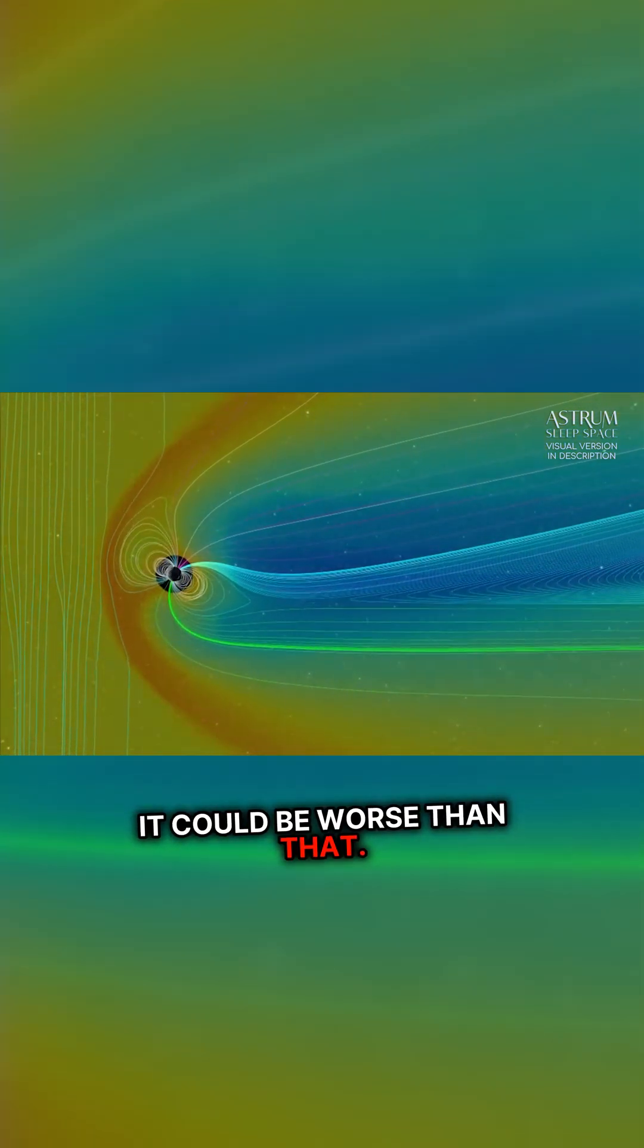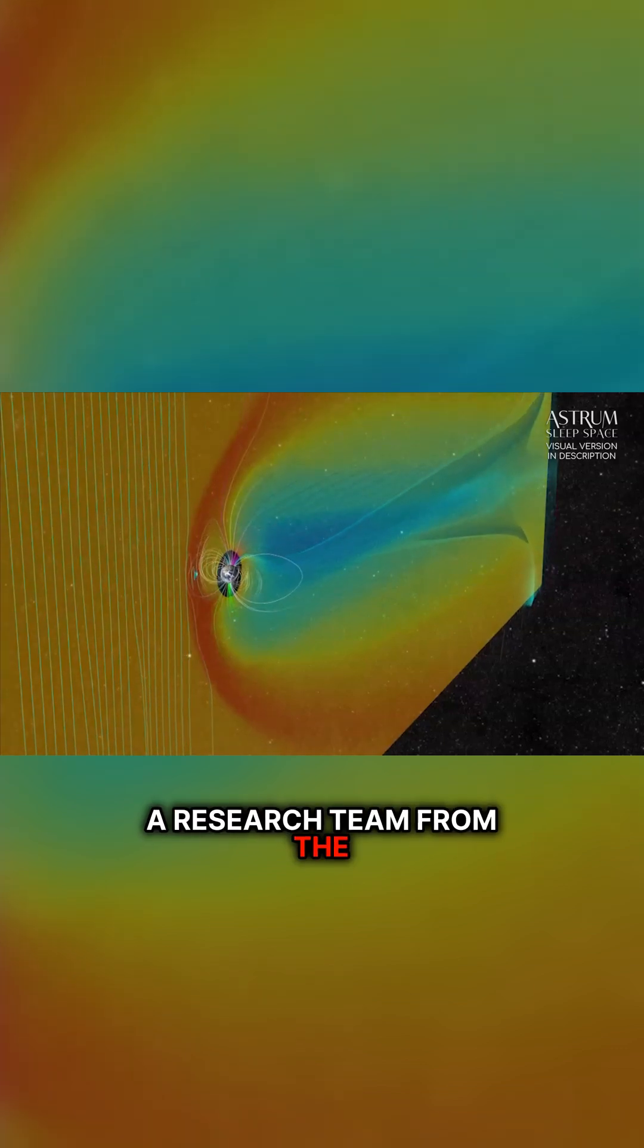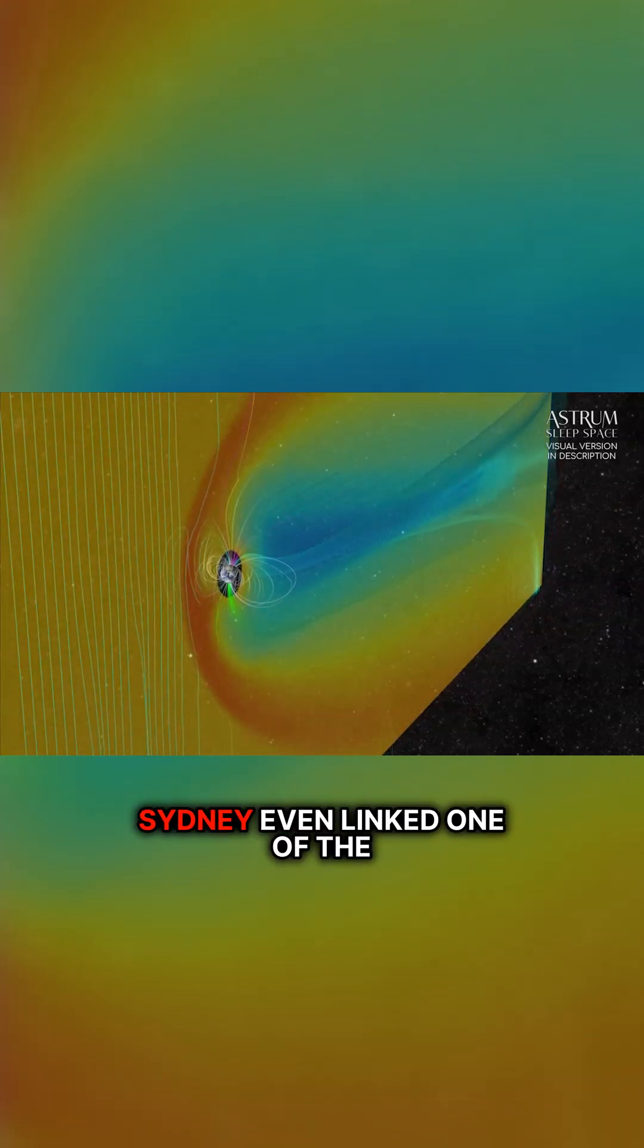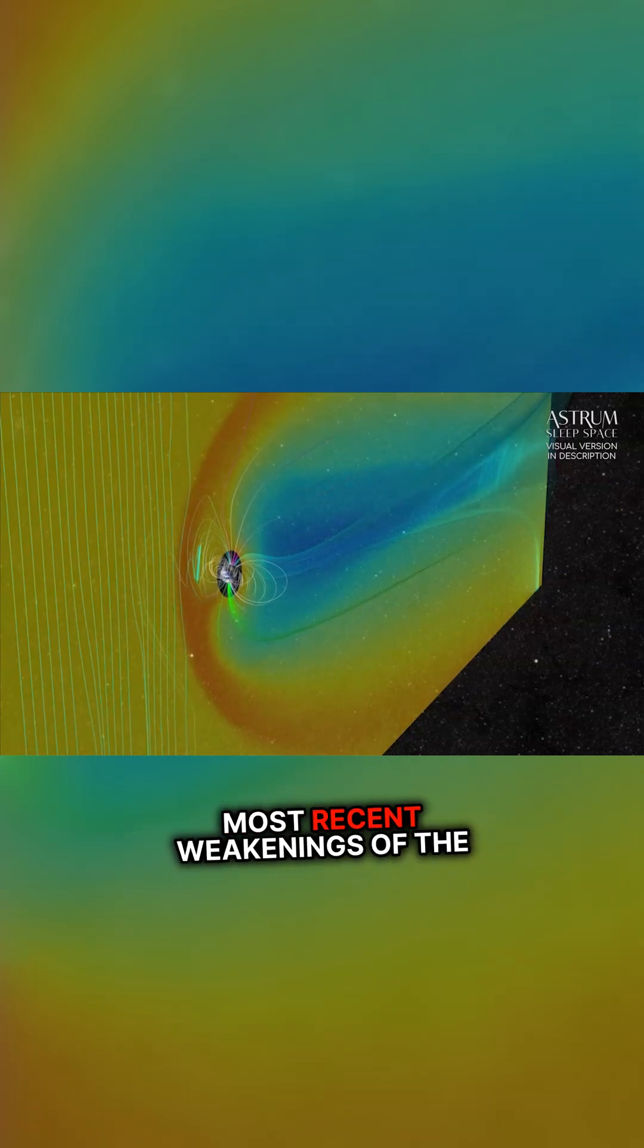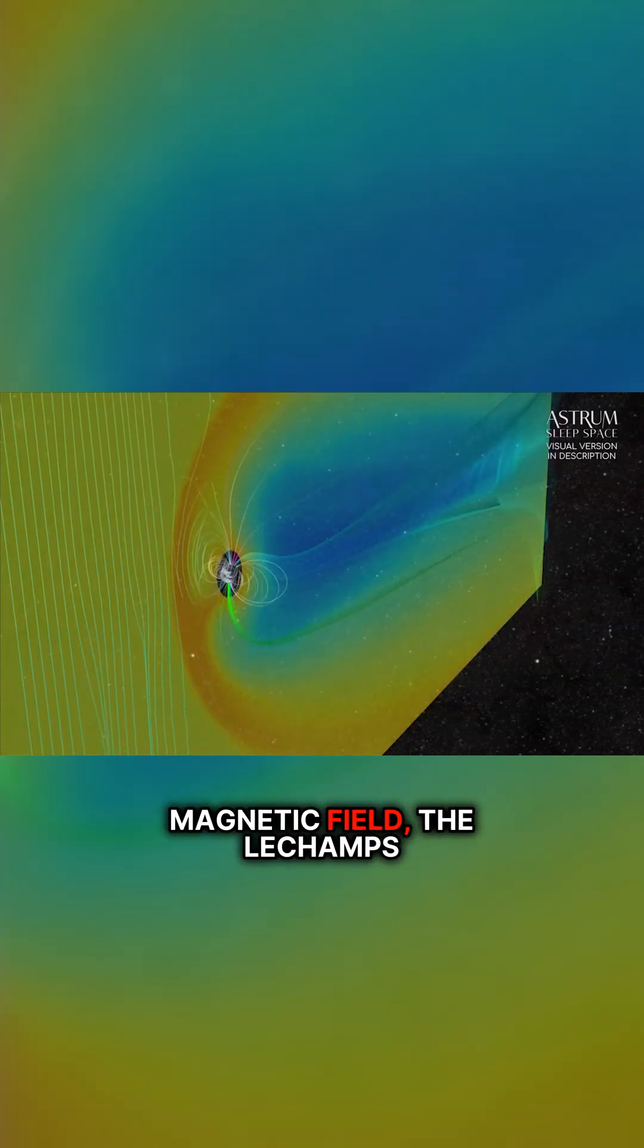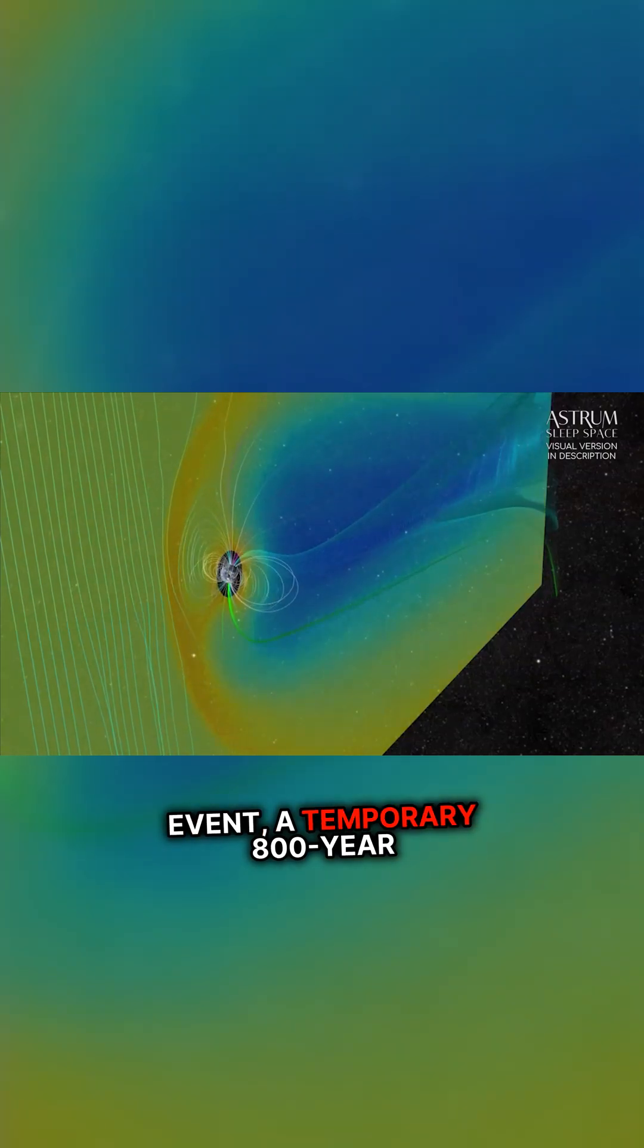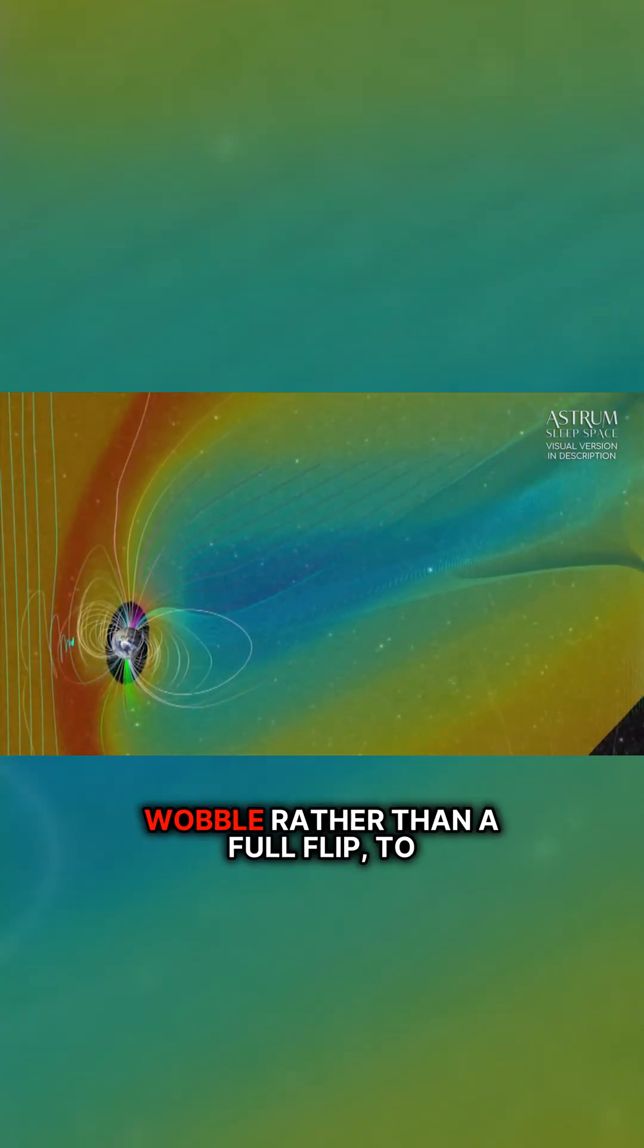It could be worse than that. A research team from the University of New South Wales in Sydney even linked one of the most recent weakenings of the magnetic field, the Le Champs event, a temporary 800-year wobble rather than a full flip,